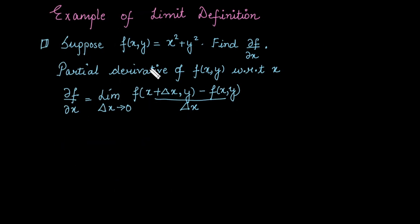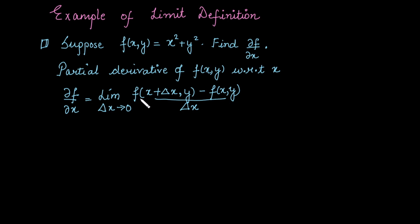Let's work with an example. The first example we have taken is the function f(x, y) = x squared plus y squared. We need to evaluate the partial derivative of the function with respect to x. The partial derivative of the function with respect to x is calculated by this form. In this case, we need the function at (x + delta x, y) as well as the function at (x, y).